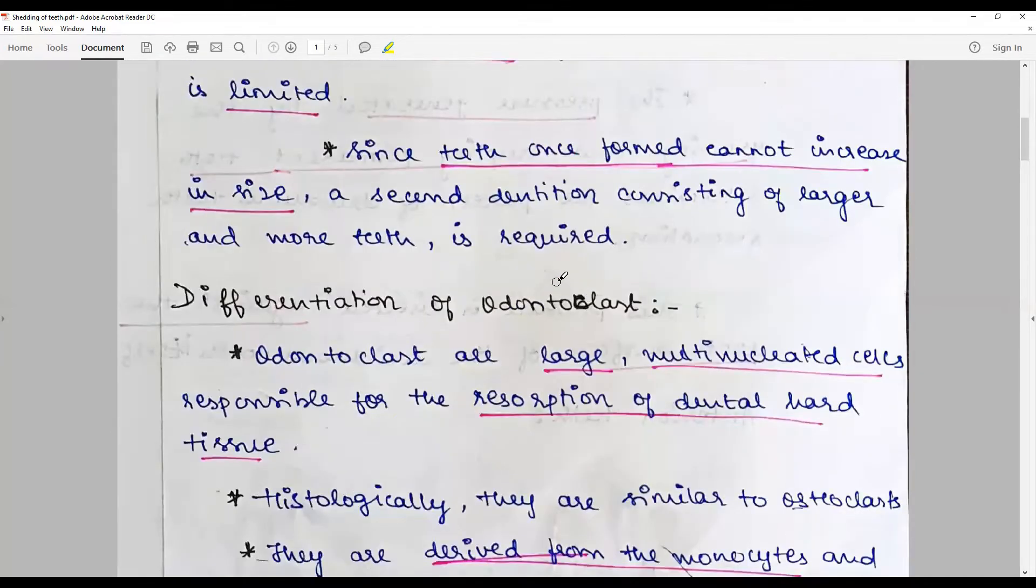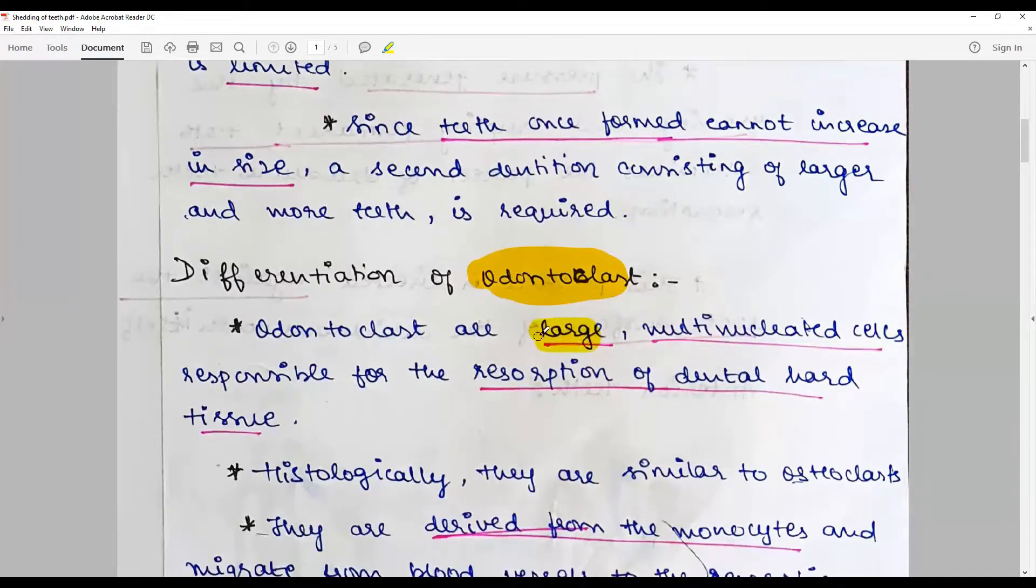The foremost necessity for the shedding of dentition is the removal of the deciduous dentition, which happens to be mediated by a unique cell called the odontoclast. Odontoclasts are described as large multinucleated cells responsible for the resorption of dental hard tissues.